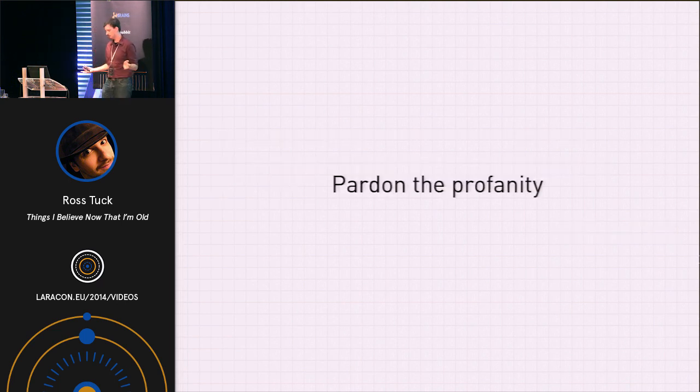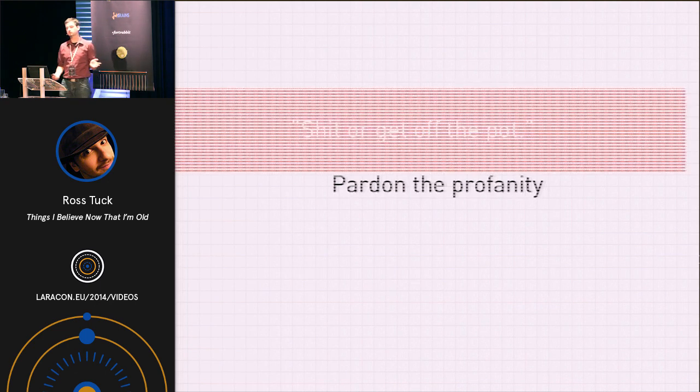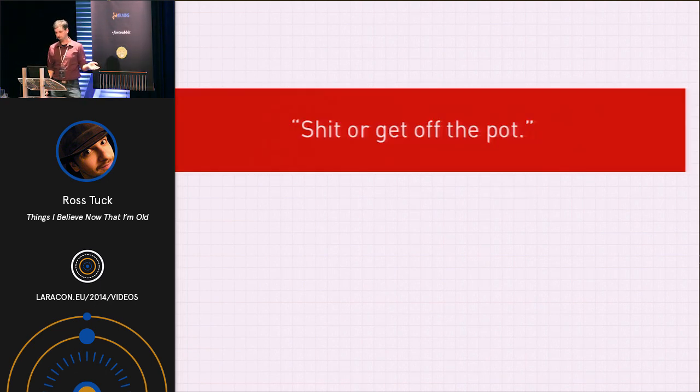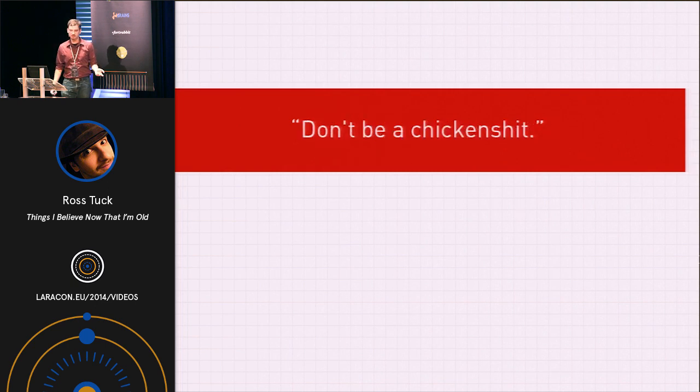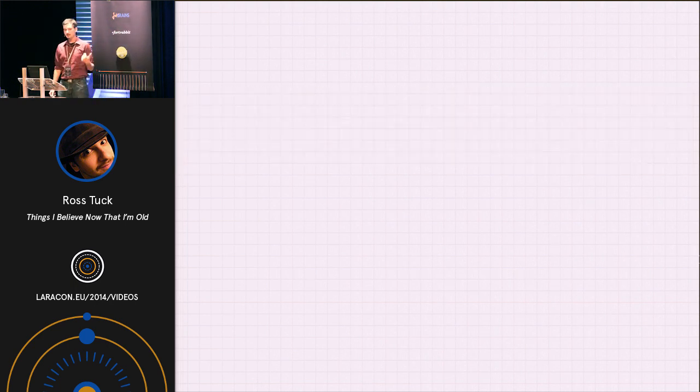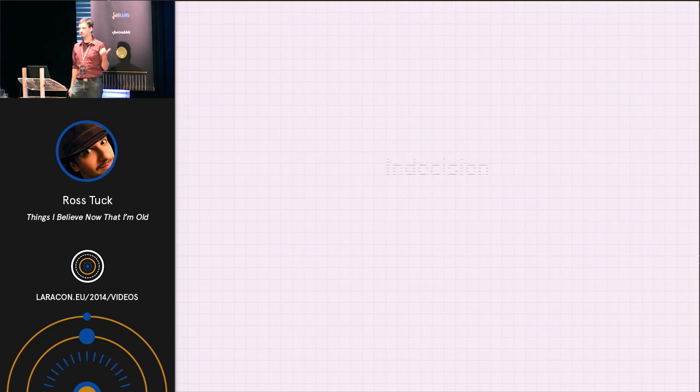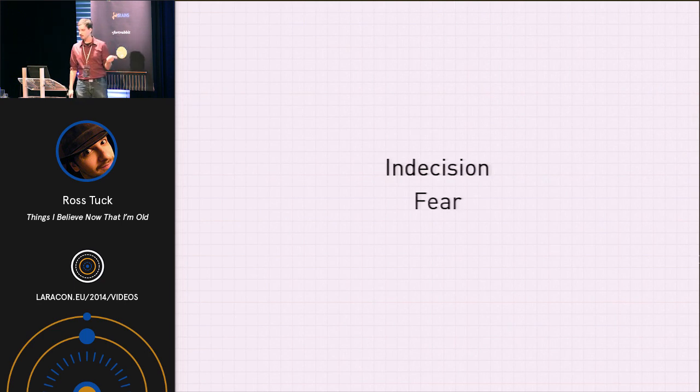Now, my family has their own version of this. If you'll pardon the profanity. My grandmother likes to say, shit or get off the pot. And my mother has her own version of this, which is, Ross, don't be a chicken shit. I'm not painting them in the best light here. They're wonderful people. We're just from the South. We have colorful expressions. Now, my grandmother here, with this expression, is talking all about indecision and getting past it. And my mother is talking all about fear and conquering it.